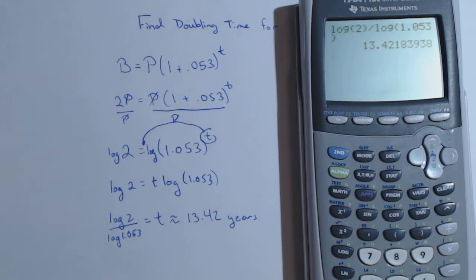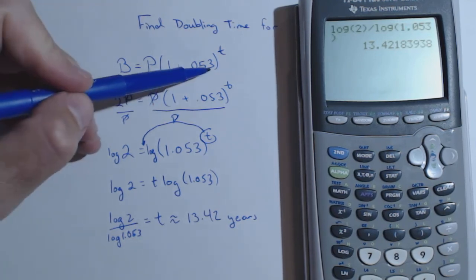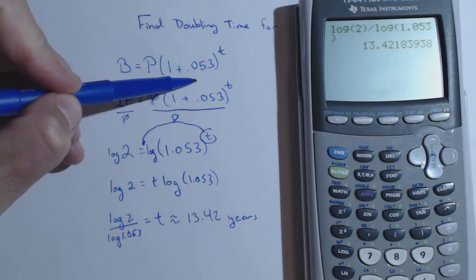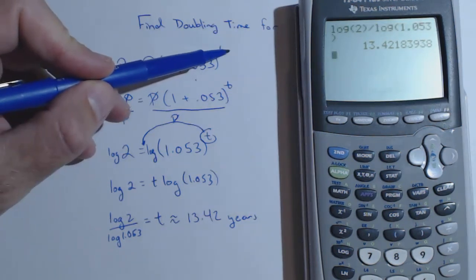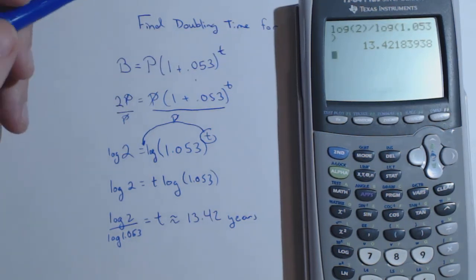We'd use the same method if it was compounded more than one time per year. Just remember you divide the rate by the number of times per year, and multiply your t by the number of times per year in your initial setup.